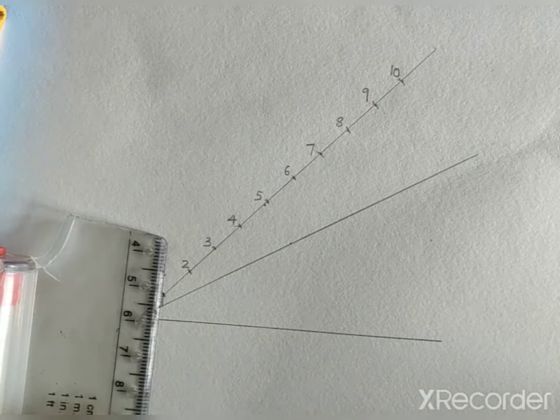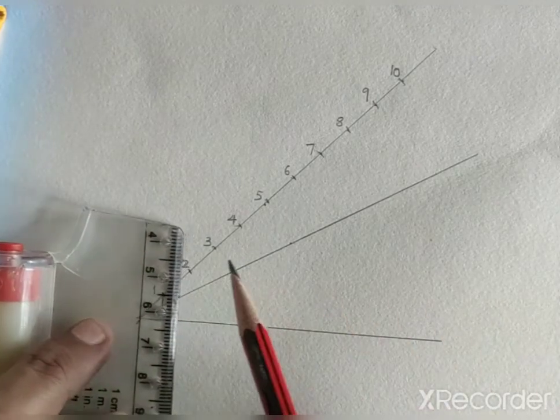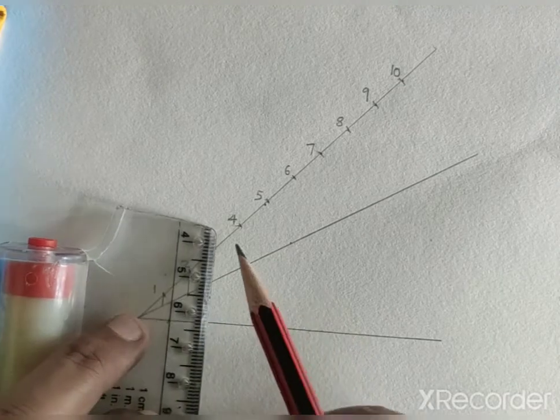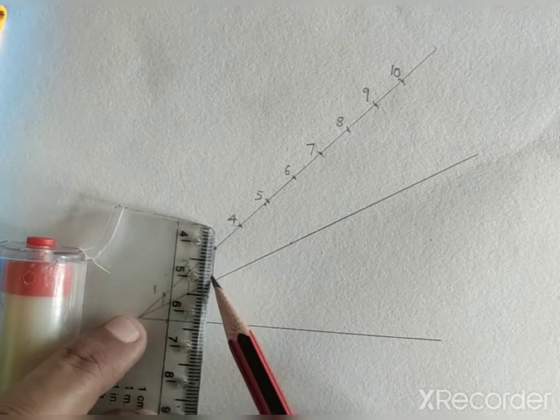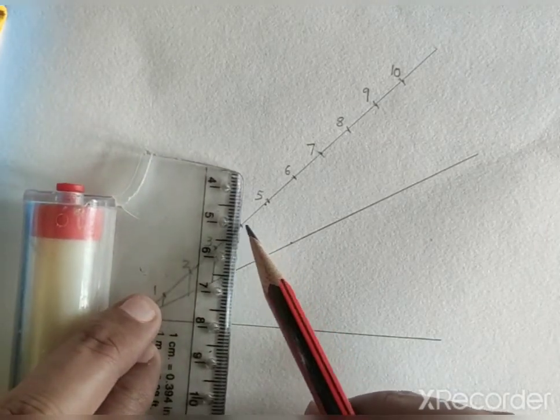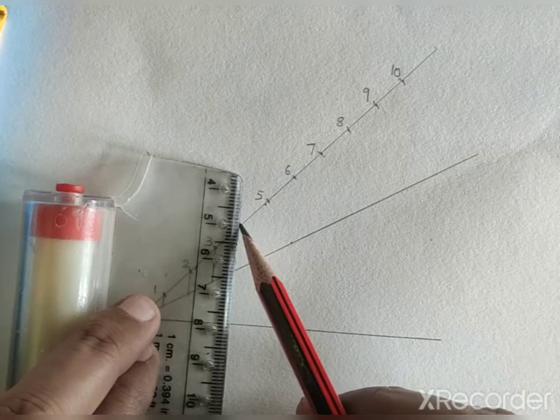Right angle. 1, 2, 3, 4, 5, 6, 7, 8, 9 and 10. Similarly, I will drop all on 30 degree line.